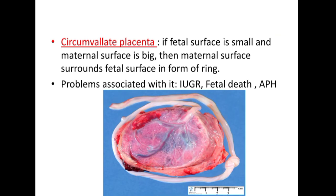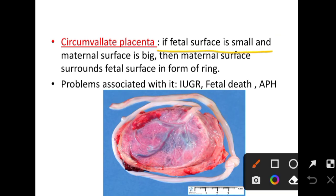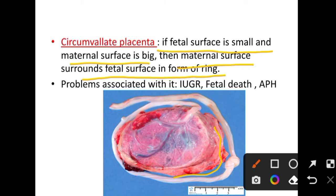Next is circumvallate placenta. This occurs when the fetal surface is small and the maternal surface is big, so the maternal surface surrounds the fetal surface in the form of a ring. As you can see in the picture, the maternal surface covers the fetal surface in a ring shape. Problems associated with this include IUGR, fetal death, and antepartum hemorrhage.